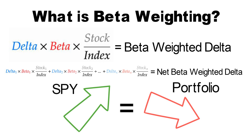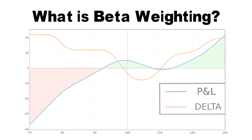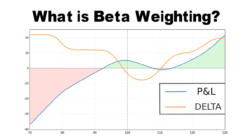Even though the beta weighted delta on its own is useful, it only gives you a very limited and static outlook into your portfolio's risk profile. Together with prices, the deltas of your positions also change. To account for these changing deltas, it is possible to create a risk graph for your entire portfolio. Just like a normal payoff diagram, the y-axis represents the P&L of the position and the x-axis describes the price of the underlying security — here, SPY. The orange line represents the beta weighted delta of your portfolio and the blue line represents its P&L. This portfolio profits most if the market either stays where it is or moves up beyond 120, but is very much exposed to big price drops in the market.